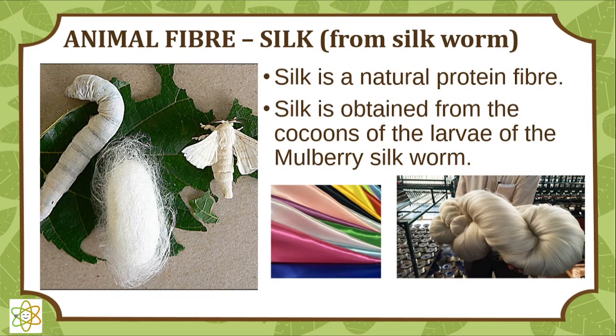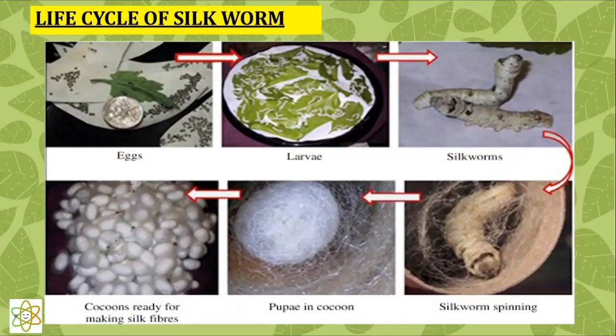Animal fiber — silk comes from the silk worm. Silk is a natural protein fiber obtained from the cocoons of the larvae of the mulberry silkworm. The life cycle of the silkworm goes from eggs to larvae, to silkworms spinning, to pupae in cocoon, and finally cocoons ready for making silk fibers.